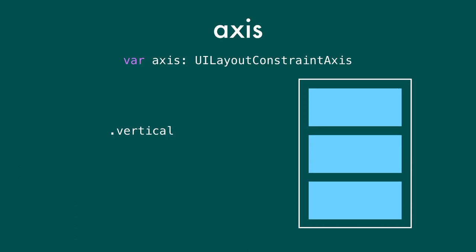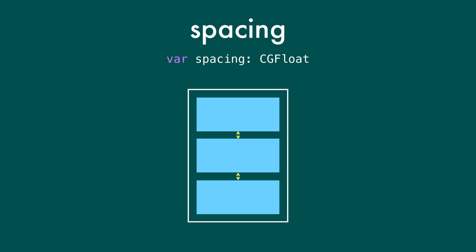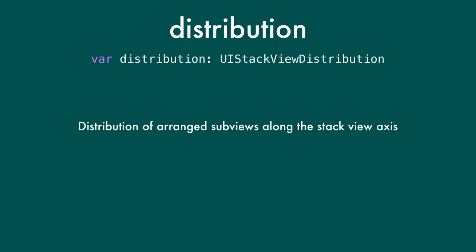The axis property lets you control whether it's a vertical or horizontal stack view. Spacing controls the spacing between elements in the stack. Layout margins controls the margins around the edges of the stack and will inset the content — though you do have to set isLayoutMarginsRelativeArrangement to true. Distribution is another property that controls the way elements in the stack are laid out relative to the direction of the axis — so for a vertical stack, it's how things are laid out vertically.